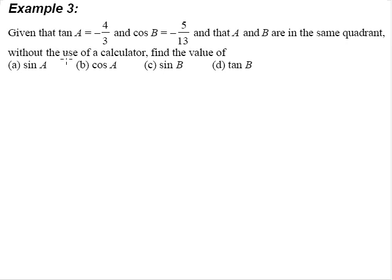For example 3, we are given that tangent A is negative 4/3 and cosine B is negative 5/13. We are also given that angle A and B are both in the same quadrant. So we are not supposed to use the calculator. We are supposed to find a value for sine A, cosine A, sine B, and tangent B.